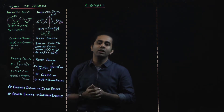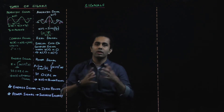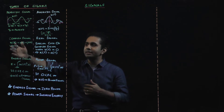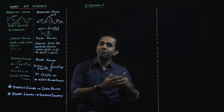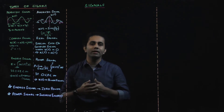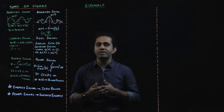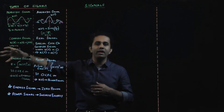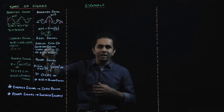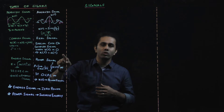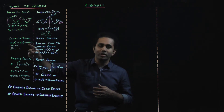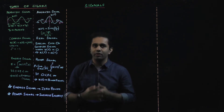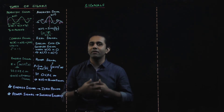Next we come to the classification of complex signals and real signals. A complex signal is any signal of the form A(t) + j·B(t), where j is defined as the square root of minus 1, or j² equals minus 1. A real signal is just a special case of a complex signal where B(t) equals 0. Substituting B(t) = 0 gives X(t) = A(t), which is a purely real signal with no imaginary component j.